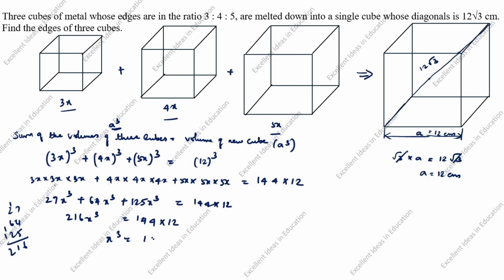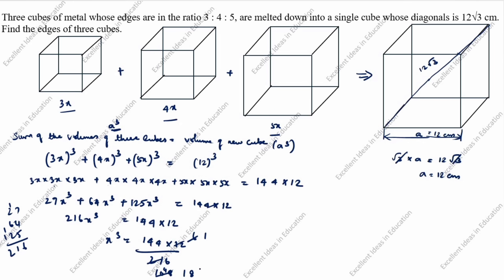So x cubed equals 144 into 12 divided by 216. Working through the division: 144 into 12 equals 1728, and 1728 divided by 216 equals 8. Therefore x cubed equals 8.